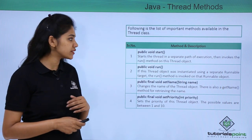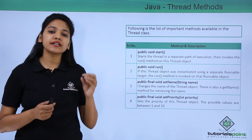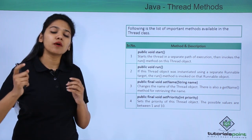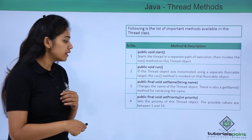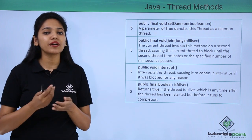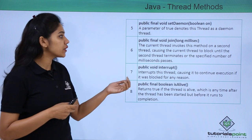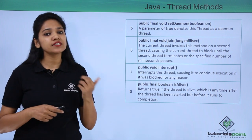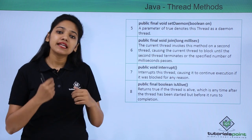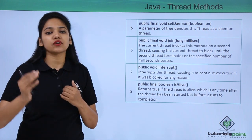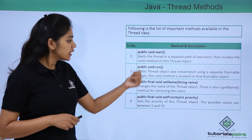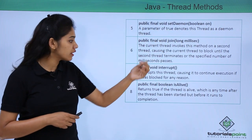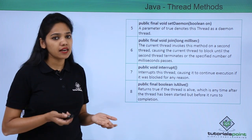Let us look at certain thread methods: start, run, setName, getName. To start a thread you use the start method, and whenever you start the thread there should be a task to be performed — that task is performed with the run method. You can set a name for the thread using setName or retrieve it with getName. Other methods include setPriority, getPriority, join, interrupt, and isAlive. The join condition says: let my thread run for a particular period of time, then let all the threads run concurrently. You also have daemon and interrupt methods.